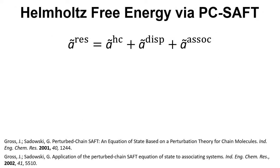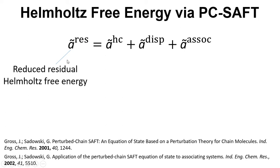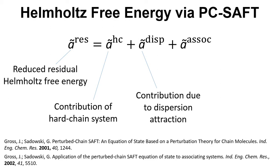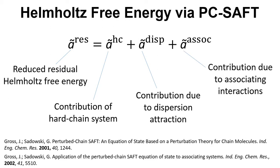SAFT can be used to calculate A-res, and then A-res can be used to calculate a number of properties. The reduced residual Helmholtz free energy A-tilde-res has contributions from the hard chain system, the contribution due to dispersion attraction, and the contribution due to associating interactions. Different versions of SAFT have different versions of these terms — at the moment this is based on the PC-SAFT version. Further equations help determine these individual contributions, which will become clearer if you watch videos where these calculations are worked through in a spreadsheet.